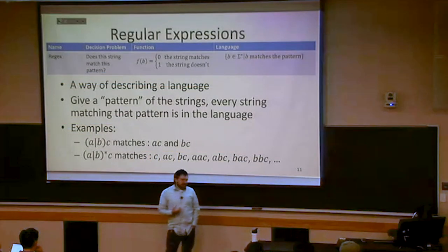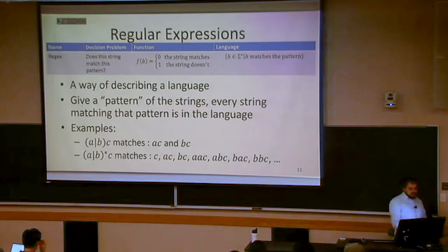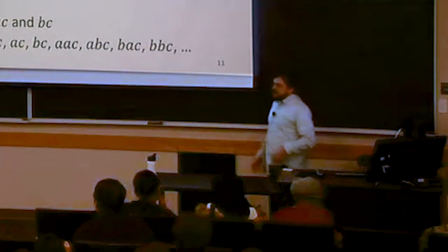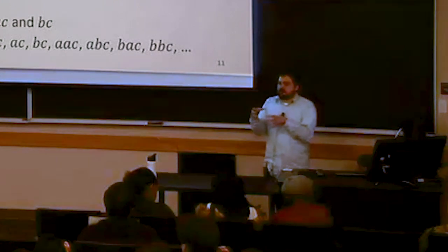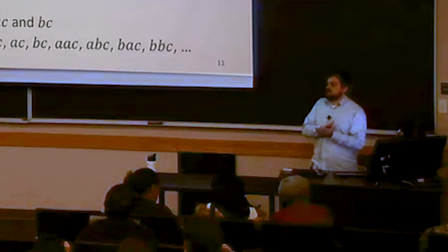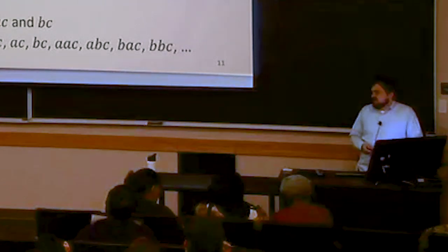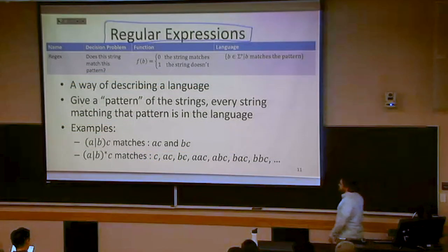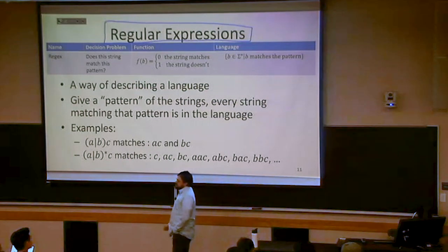To continue on this trend of discerning which things we can and cannot compute, we're going to do something kind of like what we saw with NAND circuits — a machine-looking model and a language or software-looking model. For NAND circuits, we had straight-line programs as that software model. For finite state automata, the equivalent turns out to be regular expressions.